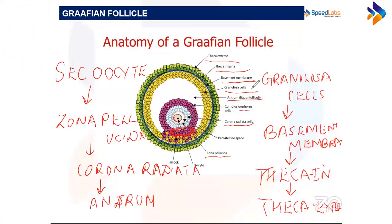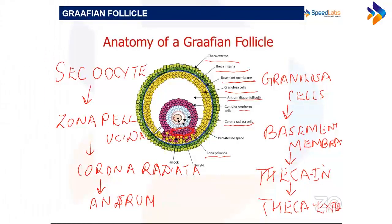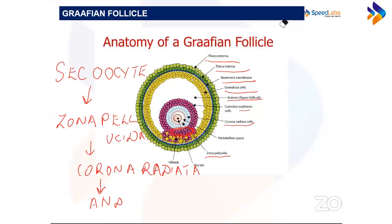This structure is often tested in MCQs. For example: which mass of cells connects the corona radiata to the granulosa cells in the Graafian follicle? The answer is the cumulus oophorus cells.